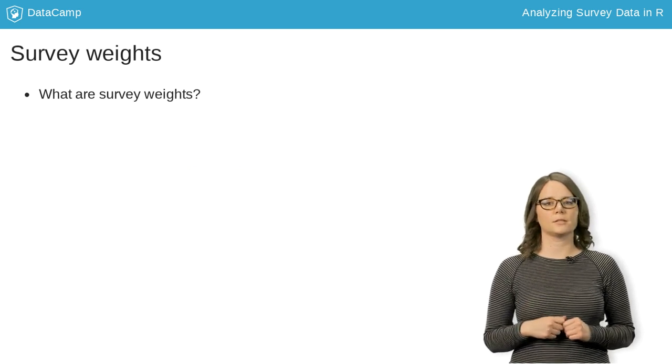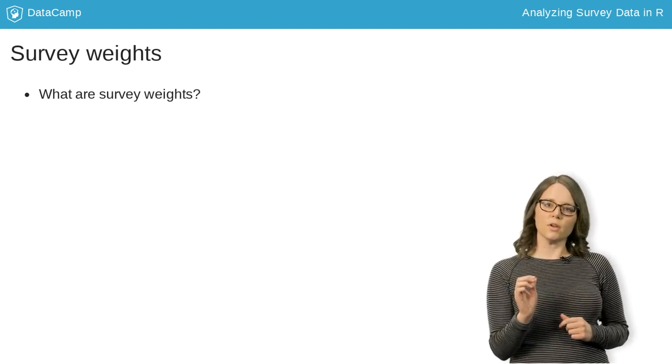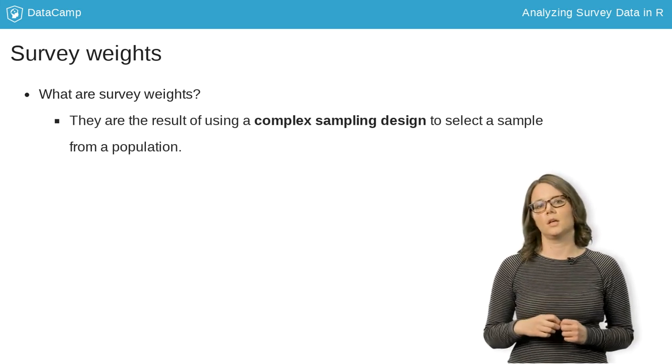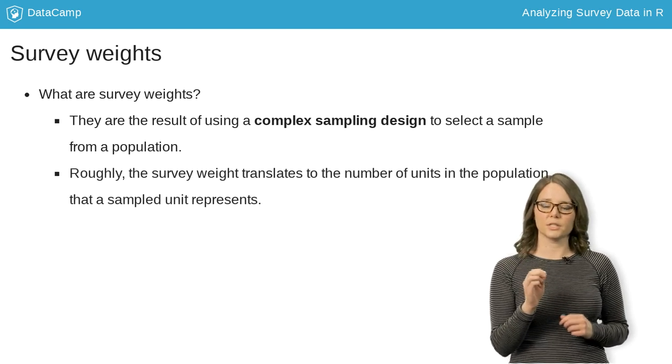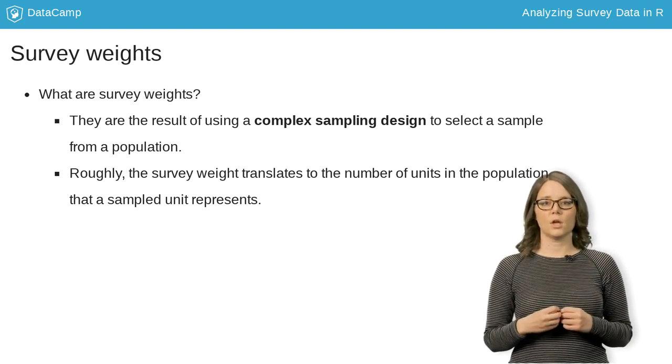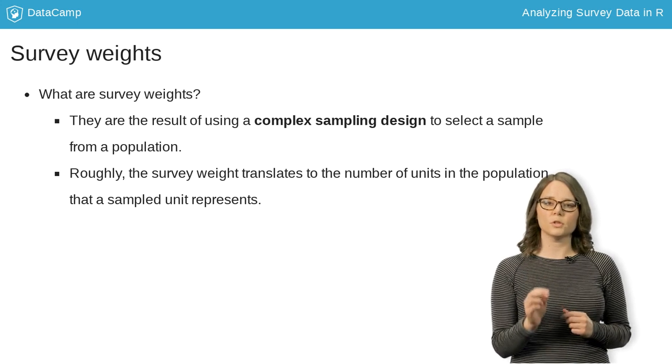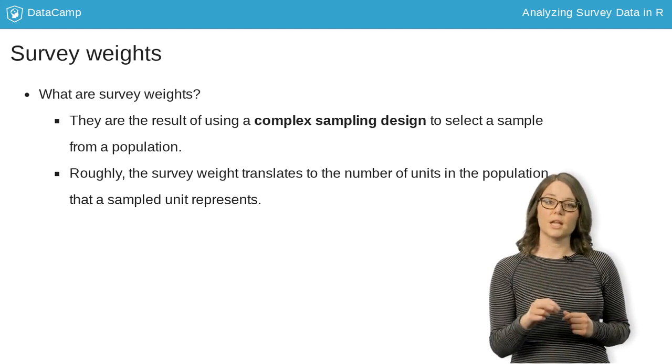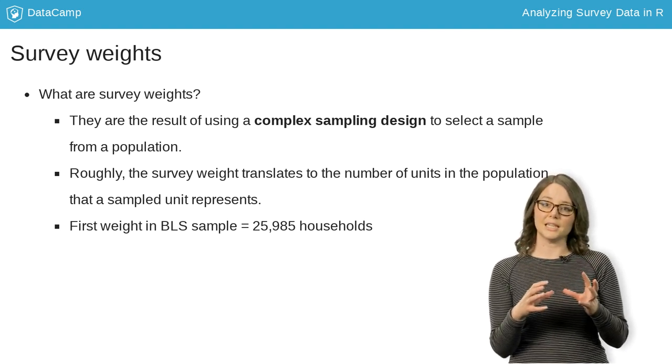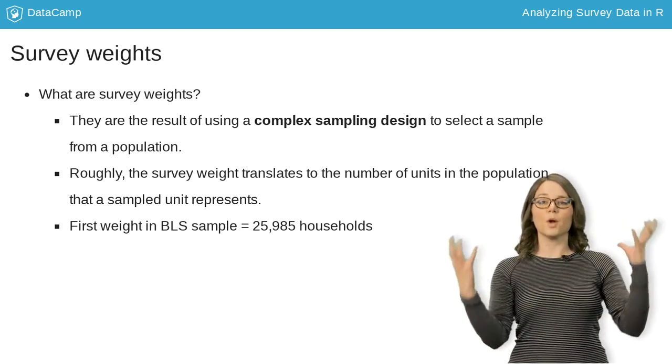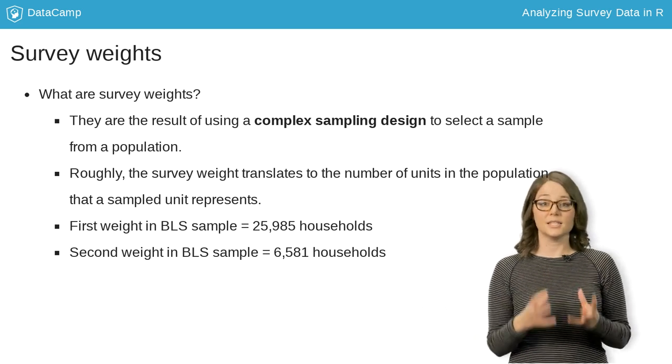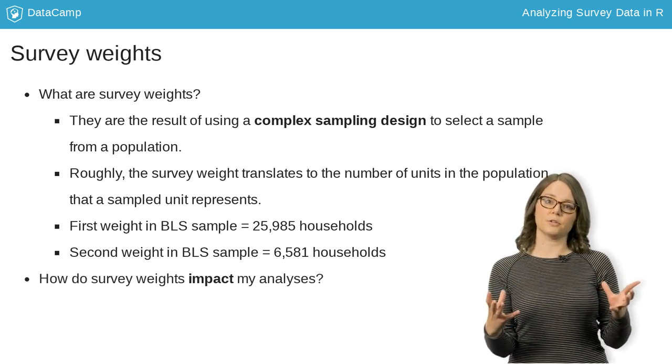First, we should ask, what are survey weights? Survey weights result from data that were collected under a complex sampling design. The weights tell us the number of individuals in the population that each sampled individual represents. Returning to the BLS sample, the first weight equals 25,985, which means that the first sampled household in the dataset represents 25,985 households in the population. The second represents 6,581 households.